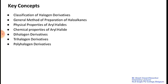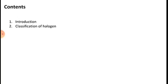The key concepts we will study are: first, the classification of halogen derivatives; second, the general method of preparation of haloalkenes; third, the physical properties of aryl halides; fourth, the chemical properties of aryl halides; and also the dihalogen, trihalogen, and polyhalogen derivatives. The contents for today's class are the introduction to the topic and the classification of halogen compounds.